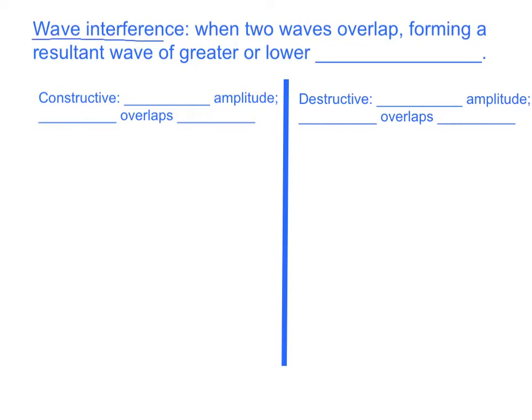We'll start with this. Wave interference is when two waves overlap forming a resultant wave of greater or lower amplitude. As we learned from our sound lab, amplitude corresponds to loudness. This is different from the Doppler effect where we were seeing a change in pitch which happens from greater or lower frequency.